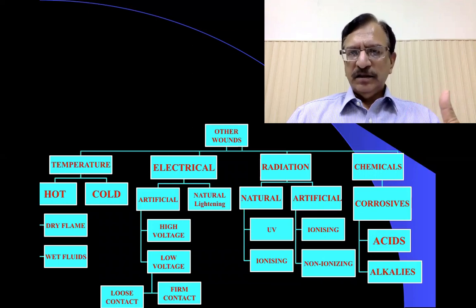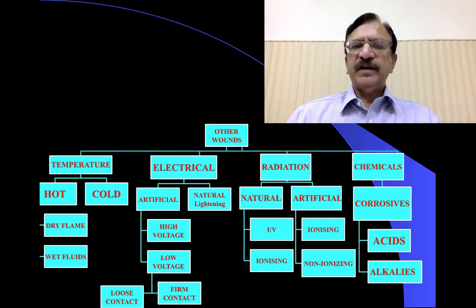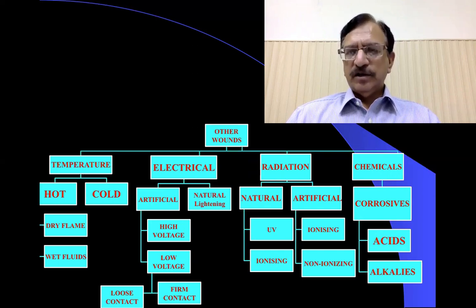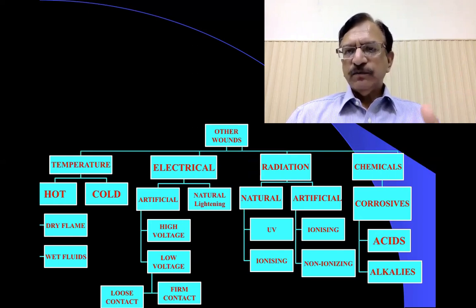Other injuries include thermal injuries — that is hot or cold injuries. Hot injuries by dry flame, or hot fluids and liquids; cold injuries like frostbite. Then electrical injuries, either natural lightning or artificial current, which may be high voltage or low voltage, with loose or firm contact. Similarly, radiation injuries — either natural ultraviolet or ionizing, or artificial ionizing or non-ionizing. Chemical injuries by corrosives, which can be strong acids or strong alkalis.